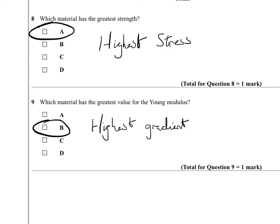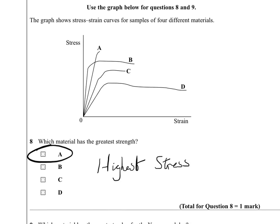So strength is the ability to withstand stress. And Young's modulus is the gradient of the stress-strain graph. And the highest gradient here is B.